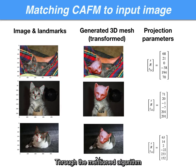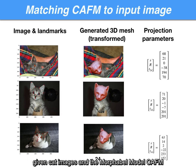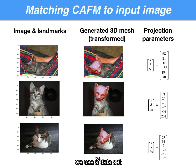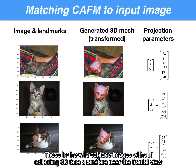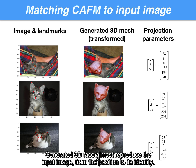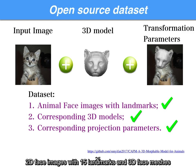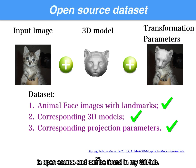Through the mentioned algorithm, given cat images and the morphable model CAFM, we can generate 3D reconstructions of input cat images with projection parameters and shape parameters. In the experiment, we use a dataset that includes 10,000 cat images with 50 landmarks. These in-the-wild cat face images without 3D face scans are near the frontal view. The generated 3D face almost reproduces the input image from the position to its identity. The cat-like animal face dataset containing 10,000 pairs of 2D face images with 15 landmarks and 3D face meshes with projection parameters is open source and can be found on my GitHub.